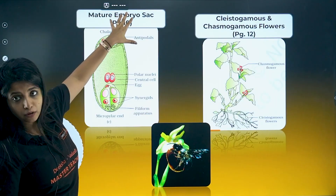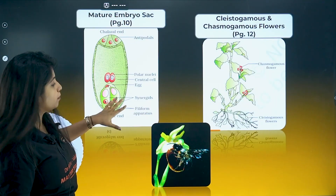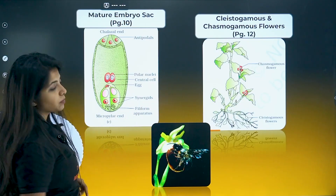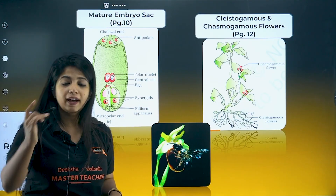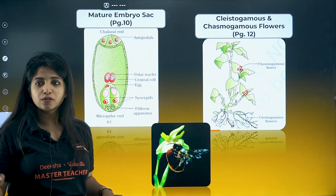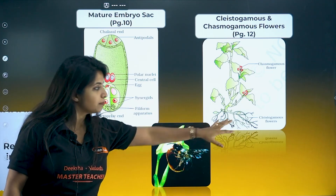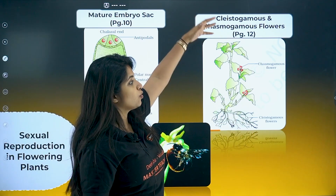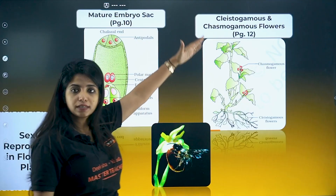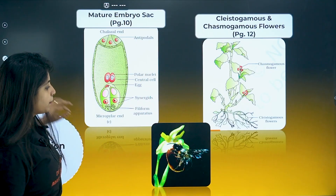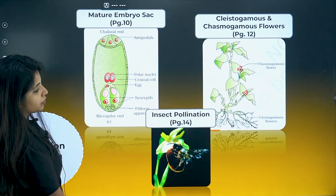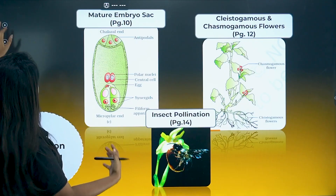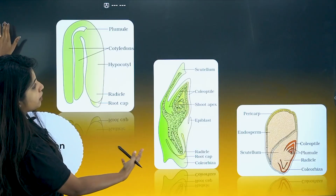The structure of the embryo sac is totally very important. The egg apparatus is located towards the micropyle end. Cleistogamous and chasmogamous flowers — Viola, Commelina, Oxalis are examples. Cleistogamous flowers are towards the root or rhizomes; chasmogamous open flowers are towards the upper region. This picture can be asked and you'll need to explain insect pollination — the features of the flowers and everything.